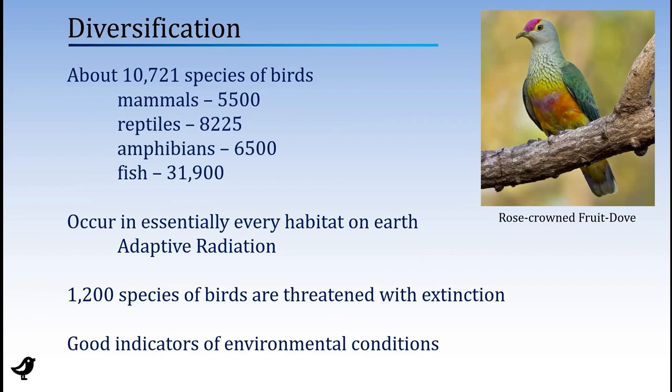Because these birds are out there everywhere, and because they're out during the day — they're singing, they're flying around, many of them are very colorful — they're very good indicators of the environment. You might contrast that with mammals, which a lot of which are nocturnal or sneaking around under the vegetation and very hard to see. They don't make any sound. So if you want to figure out what the world is doing according to mammals, you have to go to a lot of work. But birds are just kind of out there saying, 'Here I am,' or 'Here I'm not.'